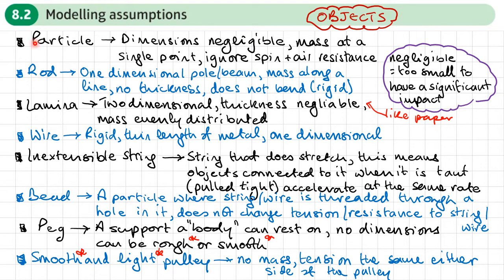There are quite a few definitions we need to go through. These definitions here are all definitions of objects: particles, rods, laminas, wires, inextensible strings, beads, pegs, smooth and light pulleys. Next to each one are listed the modeling assumptions that we make. I'm not going to go through all of these, so you probably want to pause the video and read through them and make sure you know the assumptions that we make for each type of object.